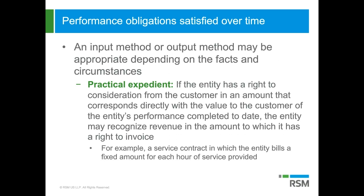Depending on the circumstances, it may be appropriate to use an input method or an output method. Output methods include things like service performance, appraisals, or milestones reached, but they're not always appropriate — for example, units delivered or units produced are not appropriate if there's significant work in progress or finished goods inventory not yet transferred to the customer. Input methods include things like costs incurred or labor hours. You don't get a free choice — you must pick the method that best depicts progress towards completion, and you can't simply recognize revenue over the longest service period.